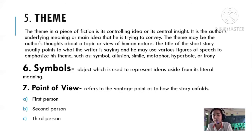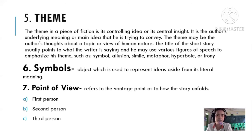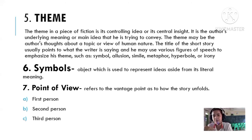The next element is symbols. Symbols are objects used to represent ideas aside from their literal meaning. For example, what does a golden apple symbolize in a certain story? Objects in stories are not merely objects — they have representation and meaning. The final element is point of view, which refers to the vantage point from which the story unfolds.